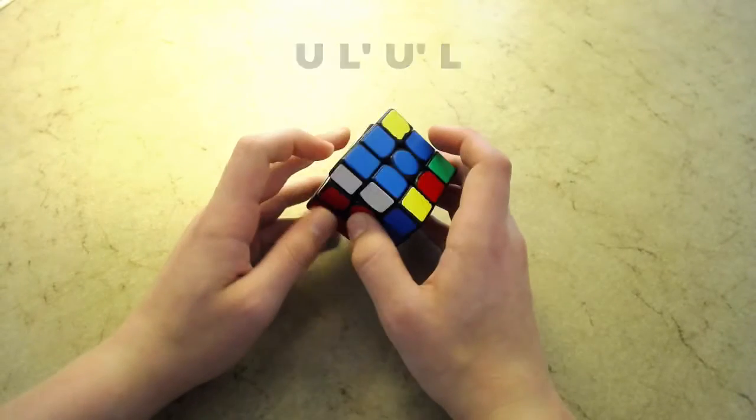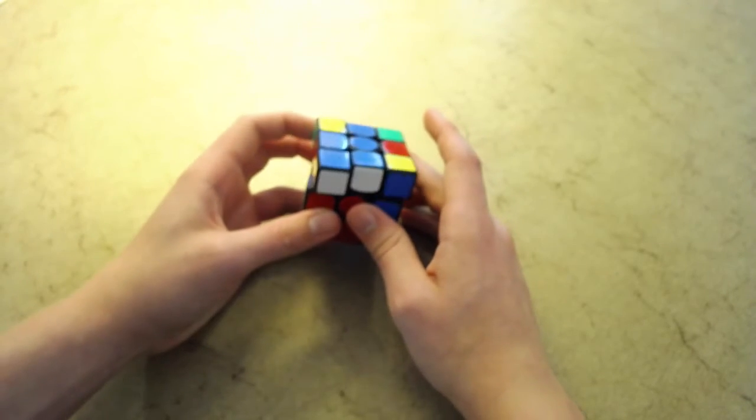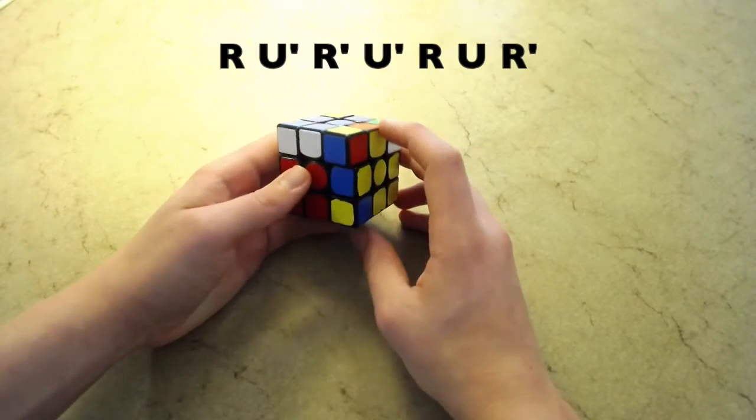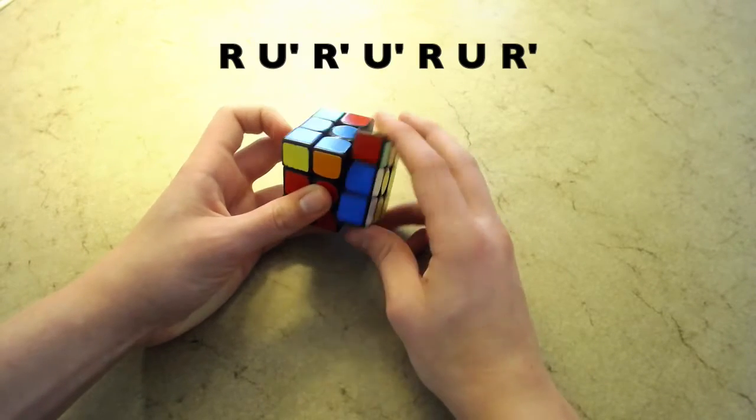But instead, I inserted that, and then started to do U prime. Then I saw this, so then I just kept it there and inserted like that.